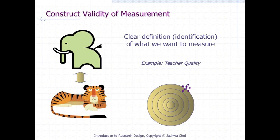Construct validity of measurement concerns the clear definition or identification of what we want to measure. For example, if one measures only parent satisfaction or only student satisfaction for teacher quality, we know these measures do not exactly or sufficiently capture teacher quality. There is a deviation between what we want to measure and what we actually measure — this is a concern for construct validity.